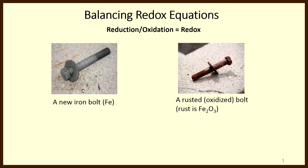If you look at the photograph on the left, you'll see a picture of a steel bolt. Steel is primarily iron, typically more than 90 percent and often more than 95 percent iron. The surface of this bolt has been cleaned so that it displays its characteristic silver-gray color of the metal iron. The photograph on the right shows an orange film on the surface of the bolt, which indicates that the surface has been rusted or oxidized. The formula for rust is Fe2O3.